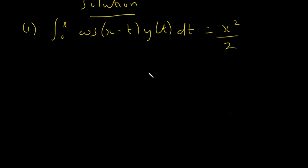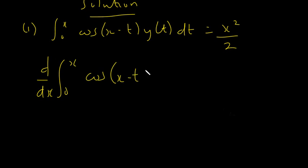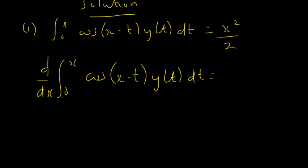To find the solution to the Volterra integral equation, we try to differentiate the whole equation. So we are going to take the derivative with respect to x of the integral from 0 to x of cosine(x minus t) times y(t) dt, and that is going to equal the derivative with respect to x of x squared over 2.